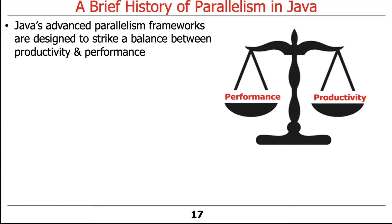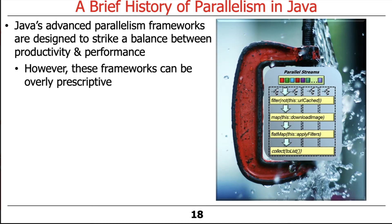Java frameworks are designed to strike a balance between productivity and performance. It's easy to get performance at the expense of ease of programming, and easy to get productivity at the expense of performance — striking that balance is tricky. The downside is that these frameworks can sometimes be overly prescriptive, focused on a particular programming model, but they work for almost everything in practice.